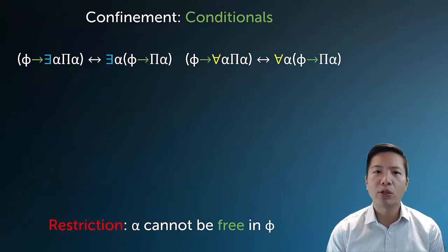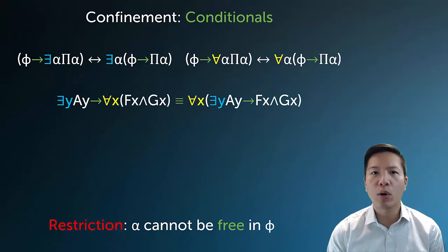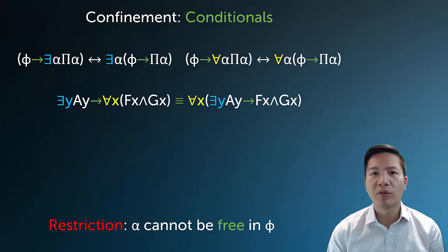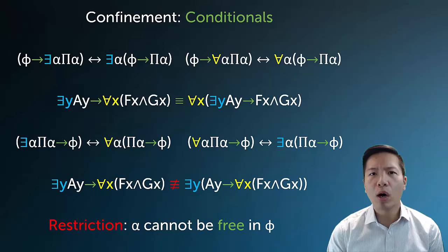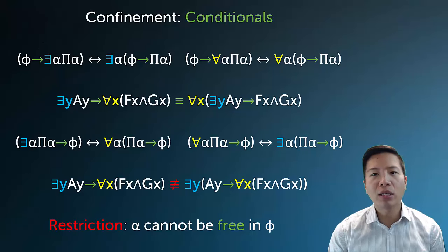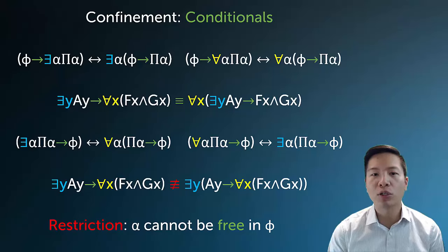Conditionals are a bit tricky. If the quantifier you want to extend falls in the consequent, there are no issues — you can move it from only modifying the consequent to the entire conditional. But when the quantifier is in the antecedent, you actually have to flip the quantifier when you pull it over the scope. If the antecedent is 'there exists a y, Ay' — saying 'if there exists an A' — extending that existential over the entire scope requires changing it to a universal, saying 'for anything, if it's an A.' That's why you need to flip the quantifier.